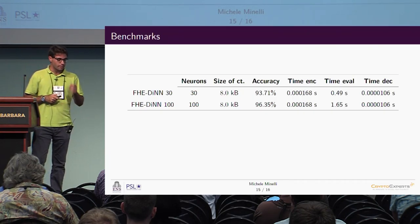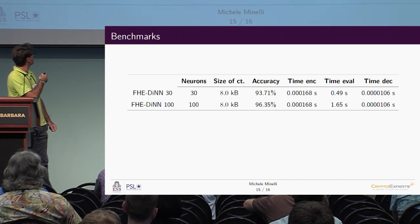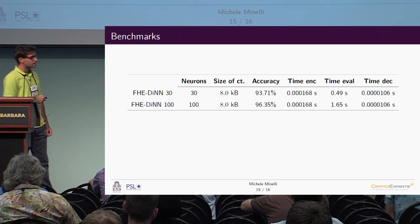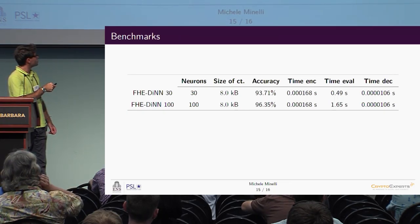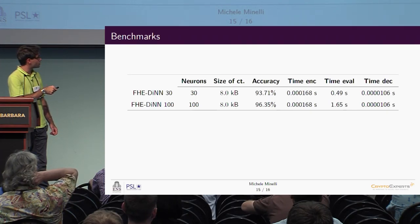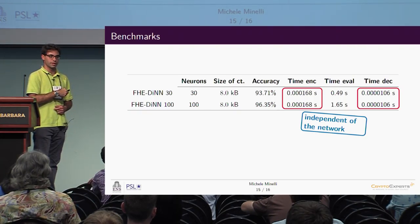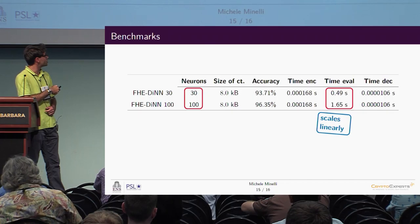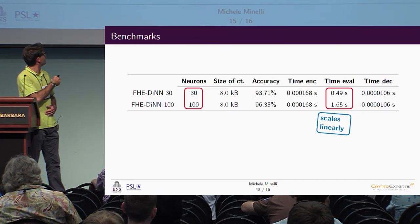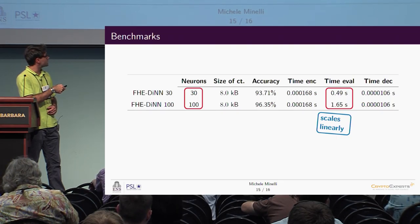Here are more numbers for our framework. The first line refers to a discretized neural network with 30 hidden neurons, the second with 100 hidden neurons. The ciphertext size is very limited — only 8 kilobytes for an entire image. Encryption and decryption times do not depend on the shape of the network — completely independent of the model being evaluated. Importantly, the evaluation time scales only linearly with the number of neurons, meaning we don't have to change any other parameters.